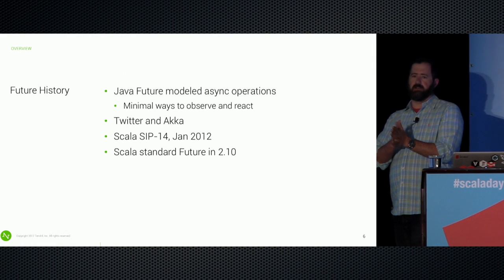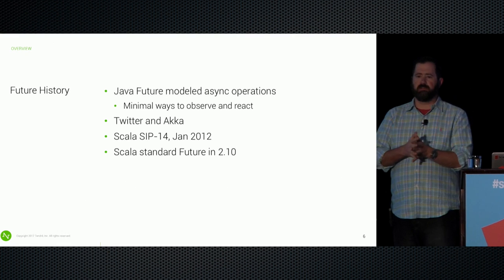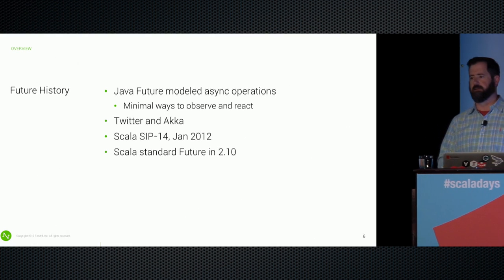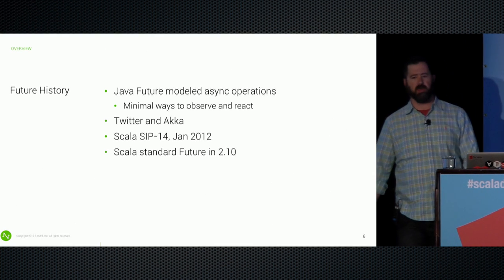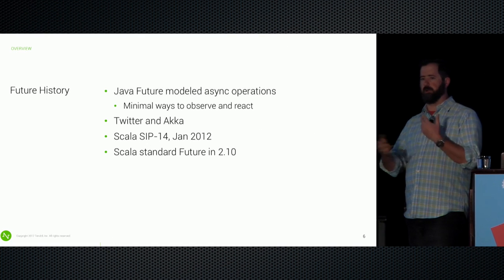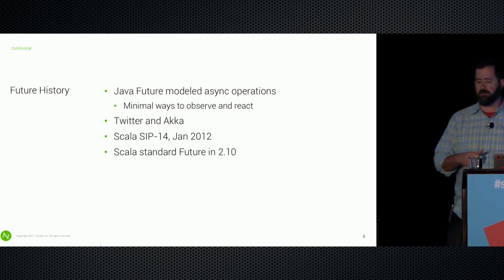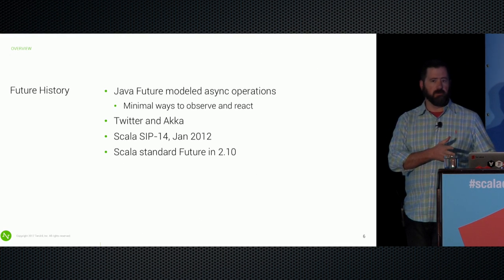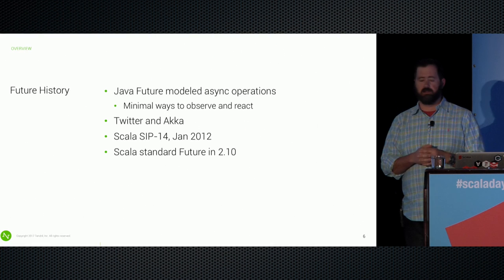A little bit of a history lesson. Back in the bad old days, Java only had basically two things we could do with futures: ask if they were done, and block until they were done. So if we wanted to keep checking, we'd have to poll and do weird things. There was very little we could do to observe and react. Twitter and Akka both experimented with putting callbacks onto futures, so both Twitter future and Akka's future allowed you to set up a callback — when a future succeeded, when the value was available, when the future failed, your callbacks would be called and executed.